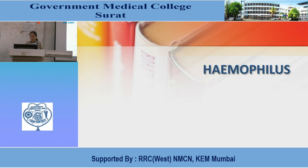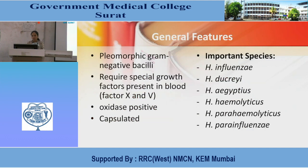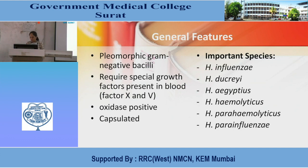Now we will see about Haemophilus. At the end of the session we will cover morphology and antigens, pathogenesis, clinical features, appropriate lab diagnosis and interpretation of results, and prevention and treatment. General features of Haemophilus: pleomorphic gram-negative bacilli requiring specific growth factors present in blood — factor X (hemin) and factor V (NAD) — oxidase positive and capsulated. Important species include H. influenzae, H. ducreyi, H. aegyptius, H. haemolyticus, H. parahaemolyticus, and H. parainfluenzae.